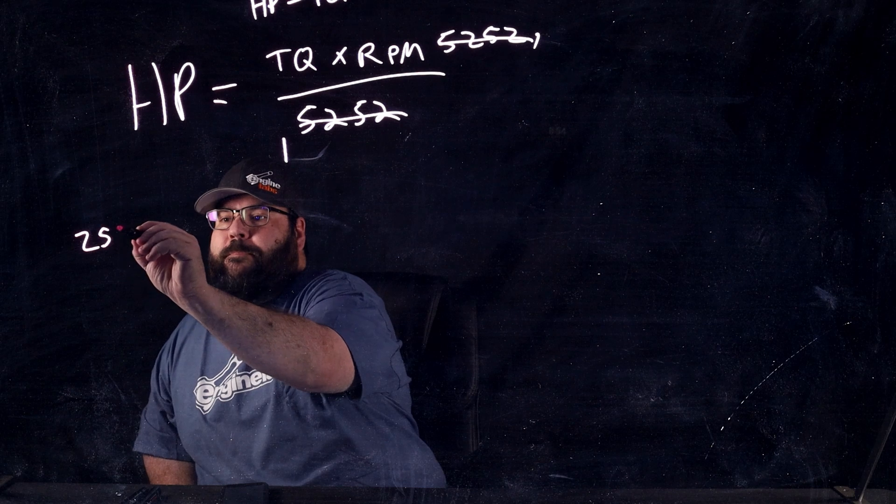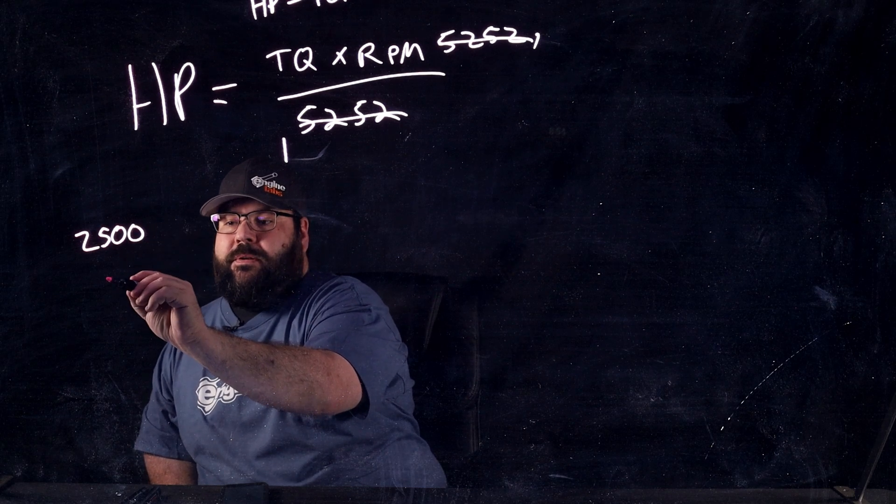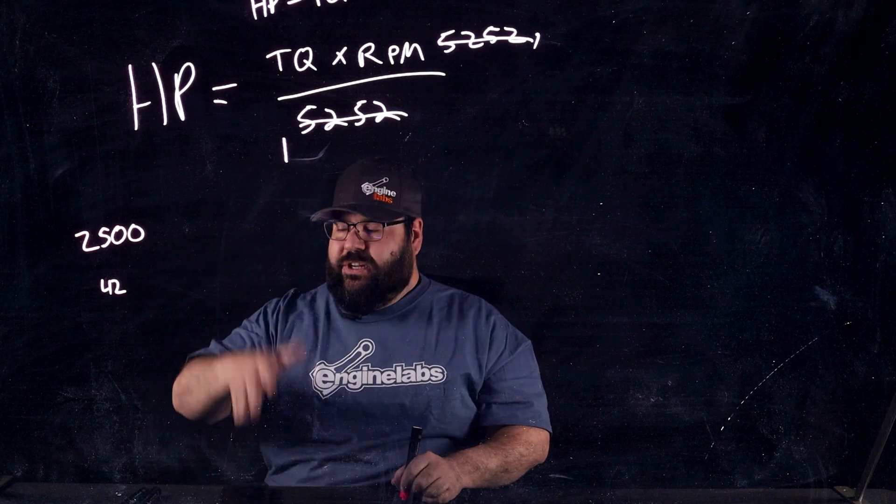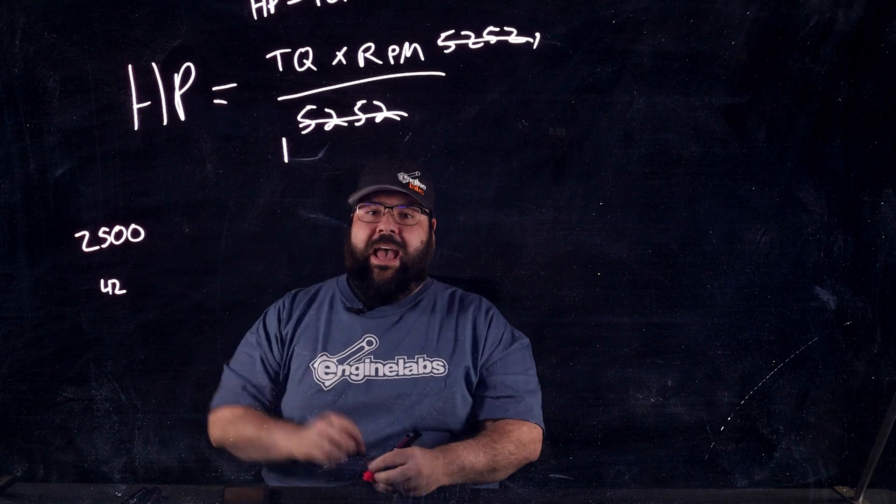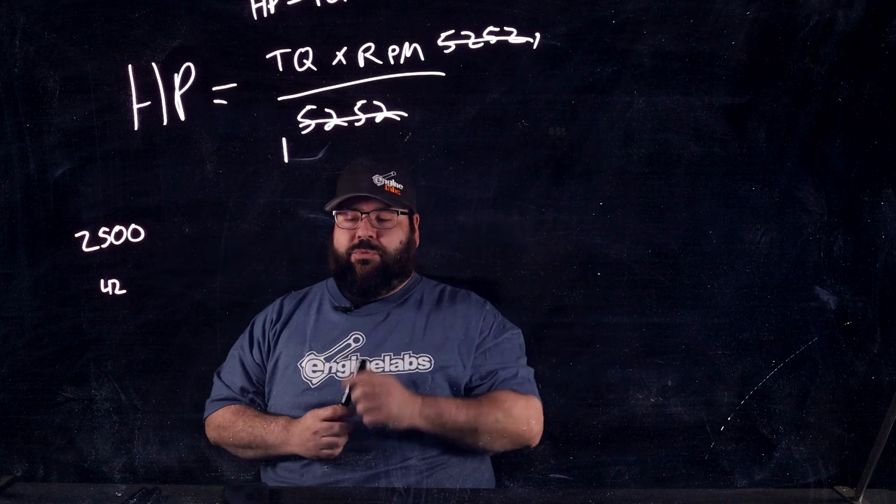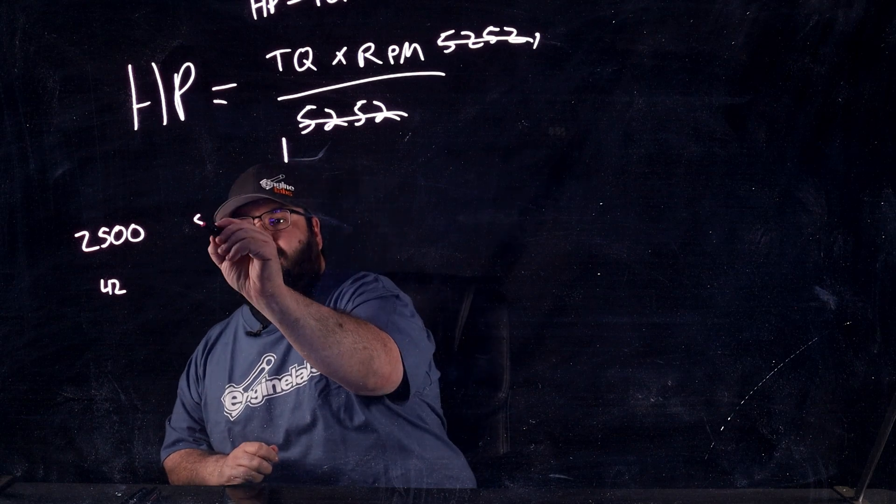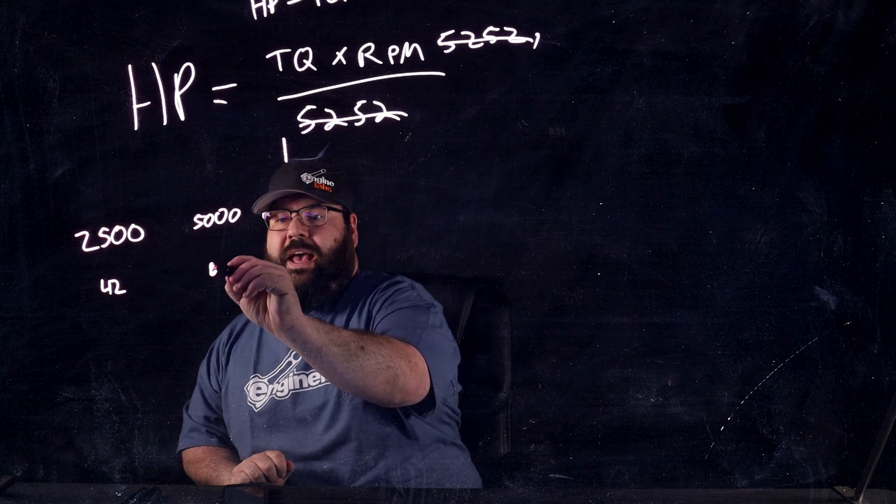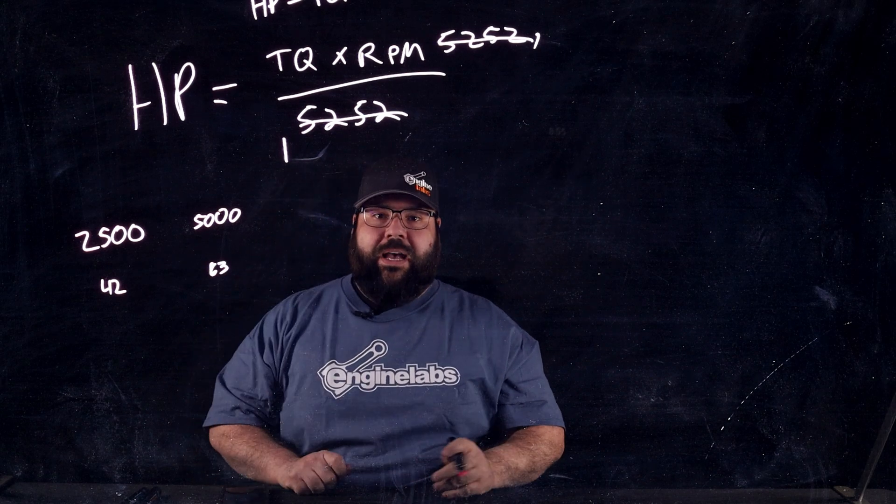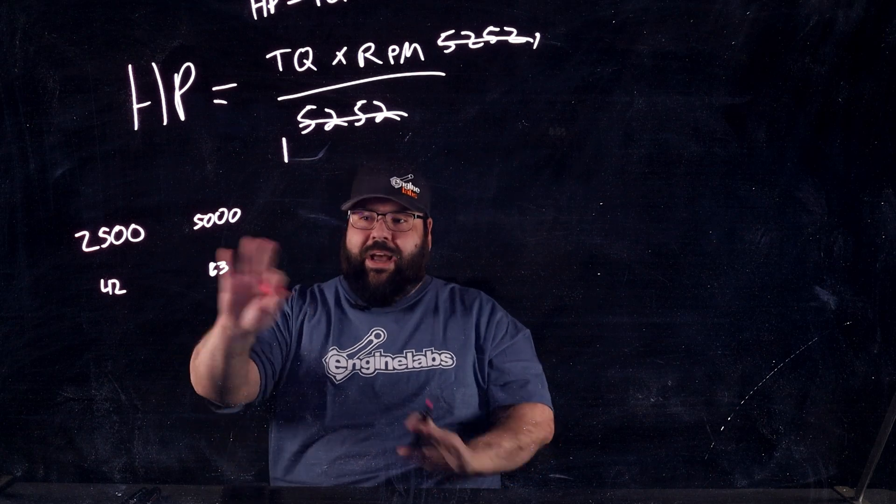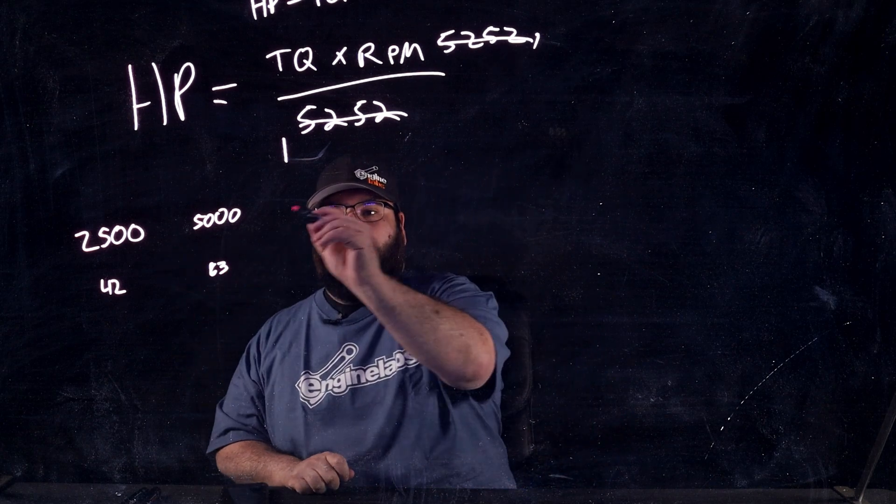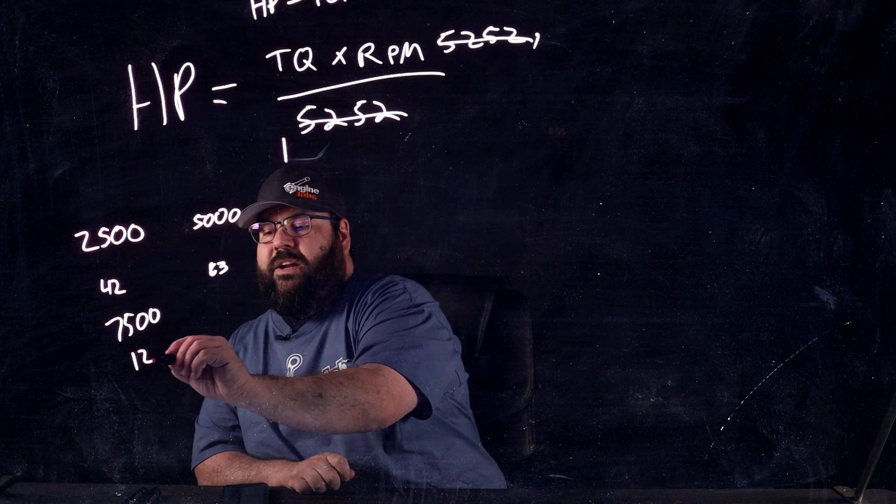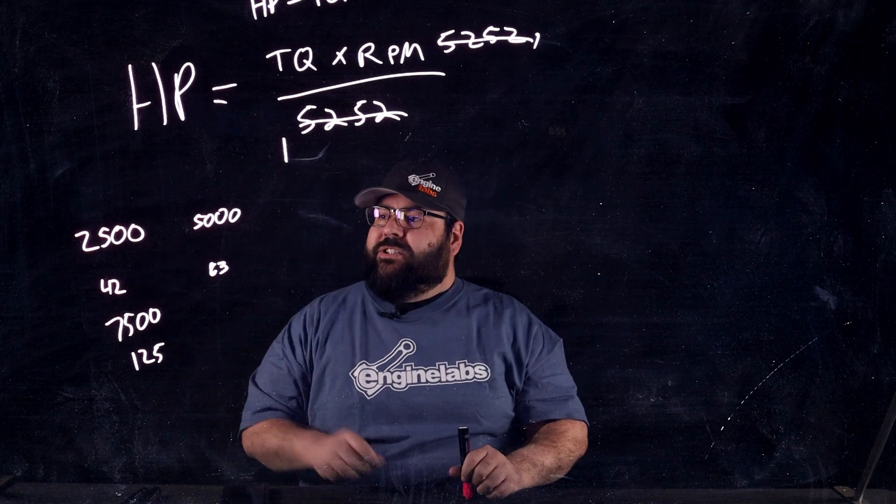So, at 2500 RPM, you are having torque happen 42 times a second. So, 42 times per second, there's a power impulse, and that makes X amount of horsepower, which we'll calculate. Now, at 5,000 RPM, obviously, you've doubled the RPM. So, you've doubled the number of time impulses per second. Not quite exact, but that's close. And then let's jump up to 7,500, and then we get a nice even 125 impulses per second.